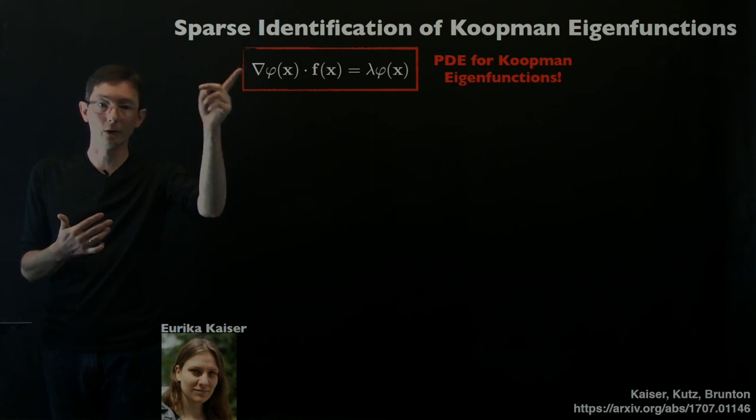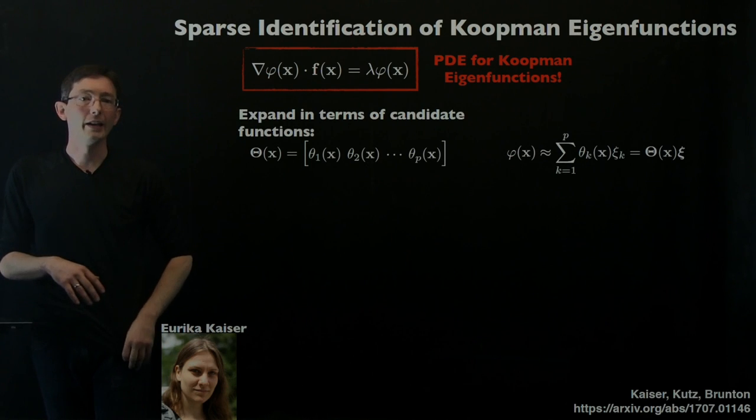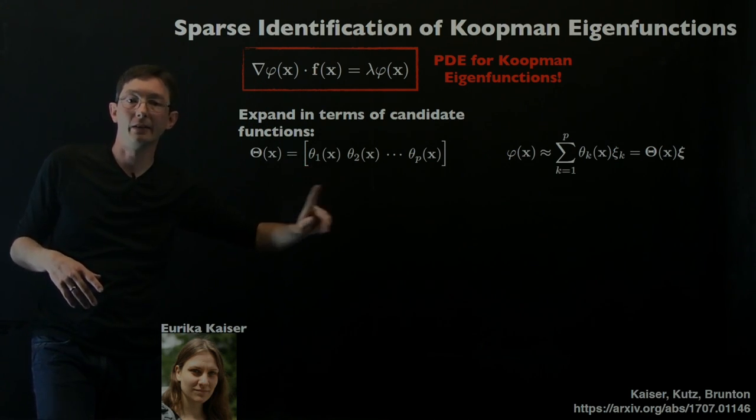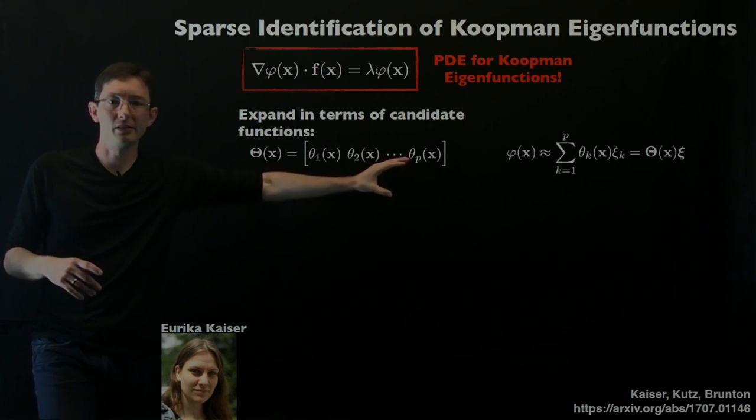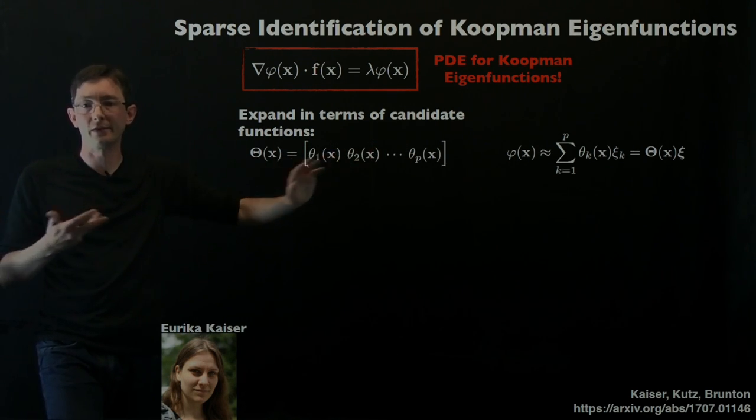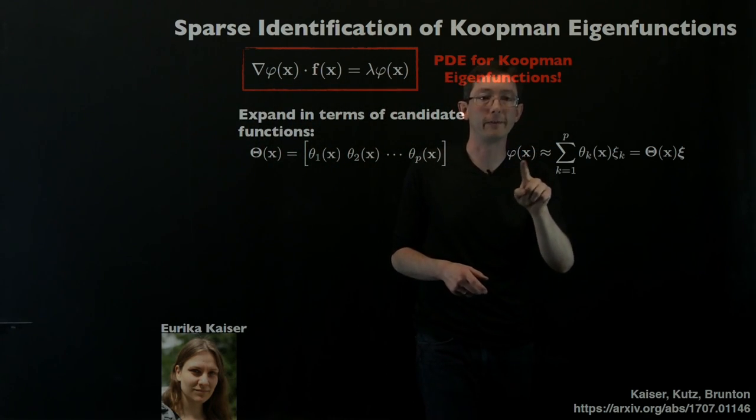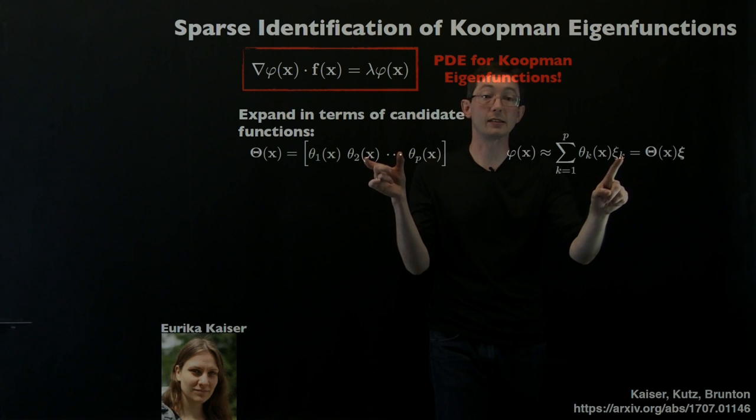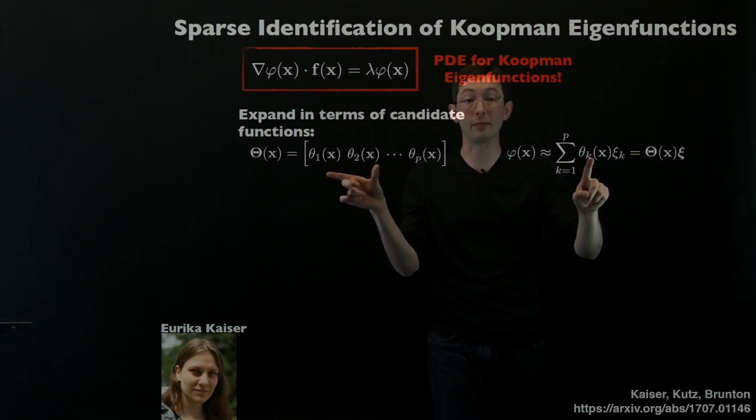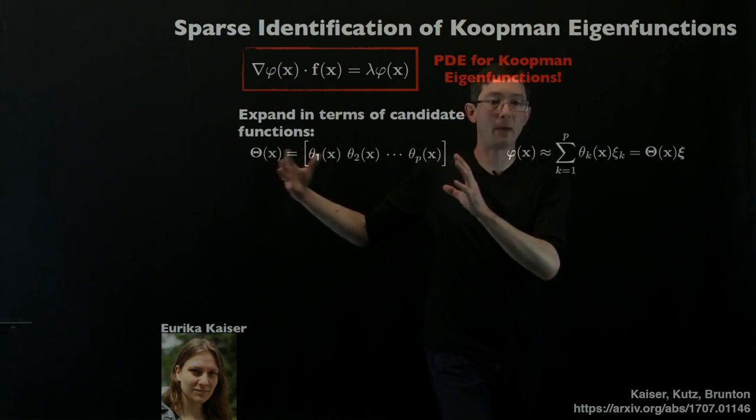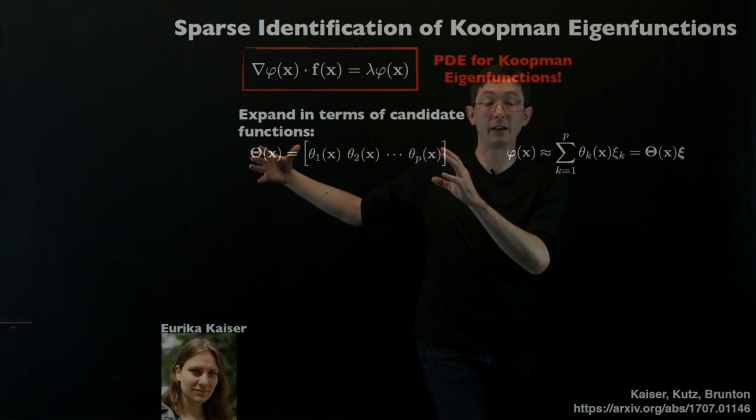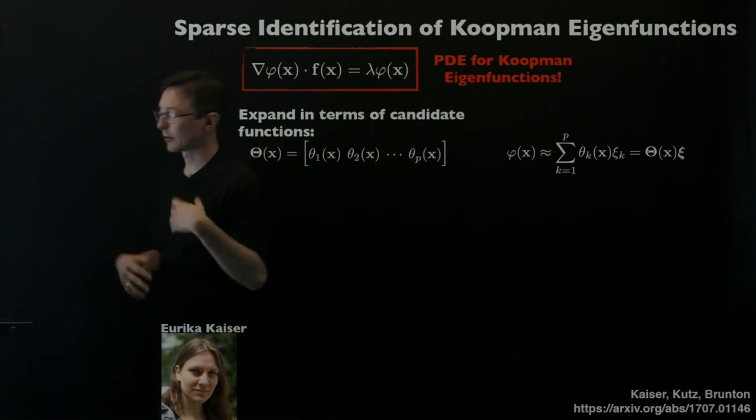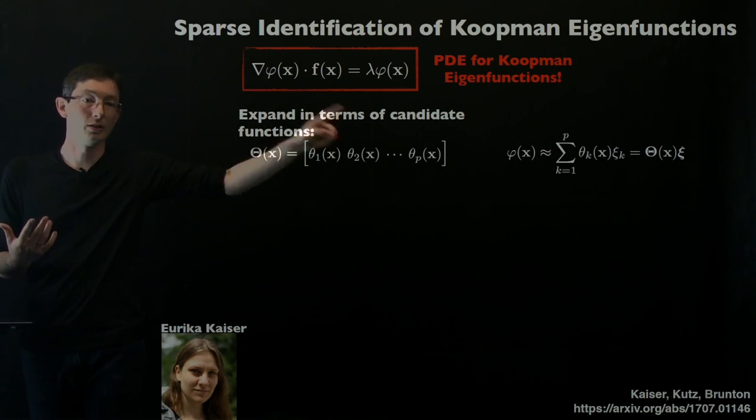We're going to use this PDE for Koopman eigenfunctions that we derived last time. What we're going to do is try to expand this eigenfunction phi in terms of this library of candidate functions theta. Each of these is a candidate function, this could be a Taylor series, this could be a Fourier series, radial basis functions, whatever you like. We're going to try to expand our eigenfunction phi as a sum of these basis functions theta. In particular we're going to want these coefficients to be sparse. We want as few of these library elements as possible for my eigenfunction. We have a basis of possible candidate functions for the eigenfunction, but I only want to pick a few of them and add up a linear combination to approximate my eigenfunction. This is related to the sparse identification of nonlinear dynamics. We're going to use the same sparse regression to find eigenfunctions.